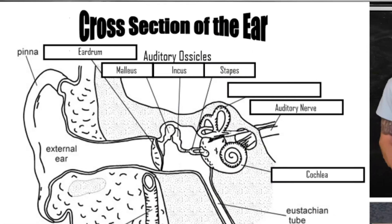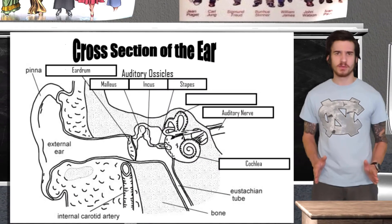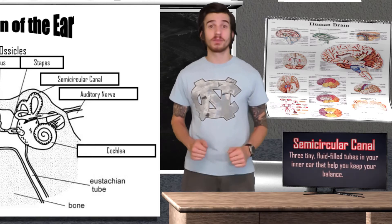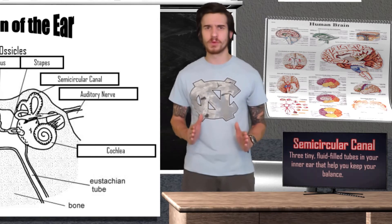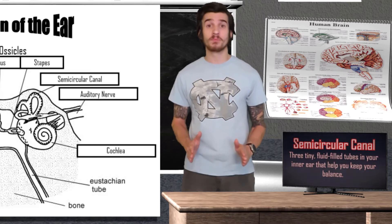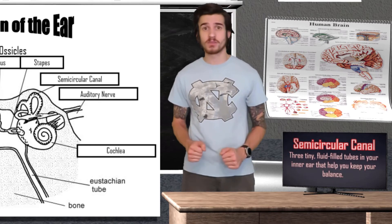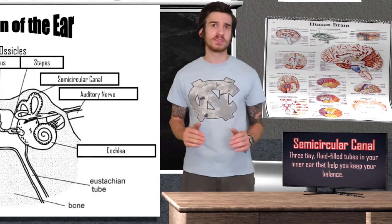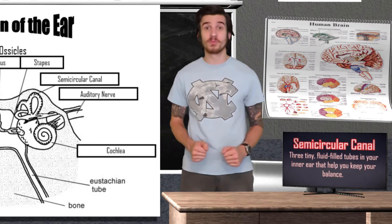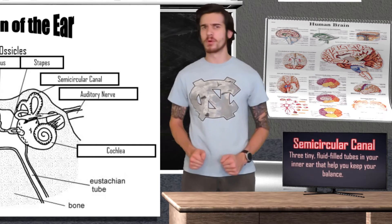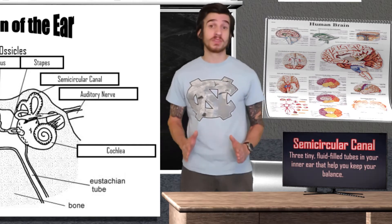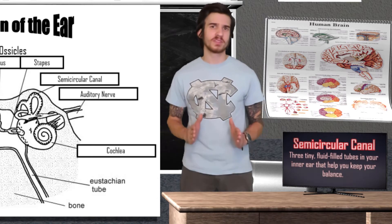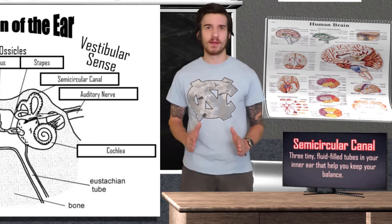Before we move away from our ear diagram, you may have noticed that we still have one box empty. This is where your semicircular canal is located. The semicircular canals are three tiny fluid-filled tubes located in your inner ear that help you with balance. Hair cells, similar to those in the basilar membrane, also reside in the canal. Every time you move your head, liquid sloshes around, moving the tiny hair cells in the semicircular canals. These hair cells then translate the movement into a neural message that is sent to the brain. Your brain interprets the message, and as a result, you are able to maintain proper balance. This is actually going to be another one of our body senses, known as the vestibular sense, which is mainly responsible for our balance.